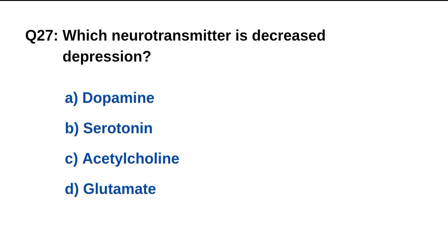Question number 27. Which neurotransmitter is decreased in depression? The right option is C: Serotonin.